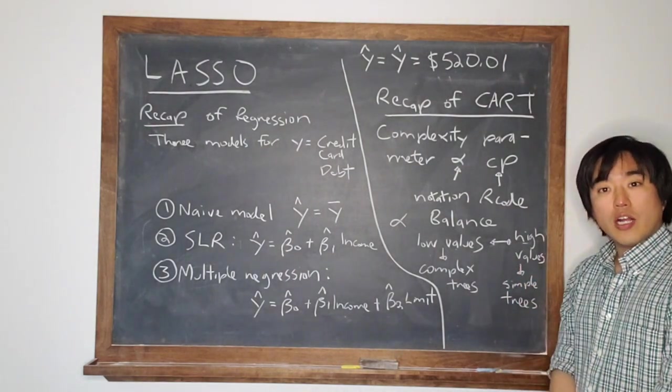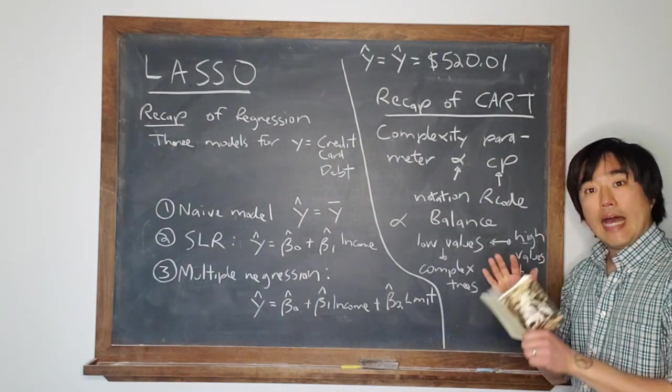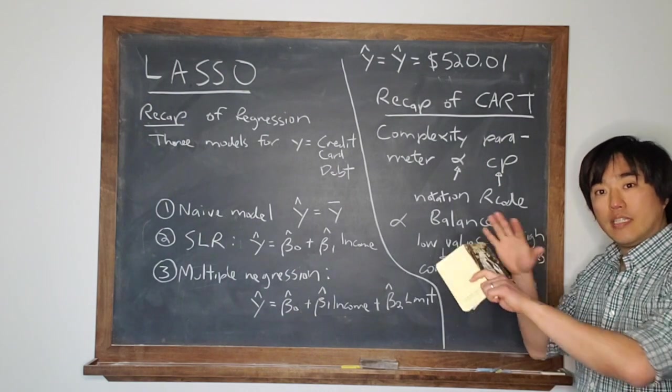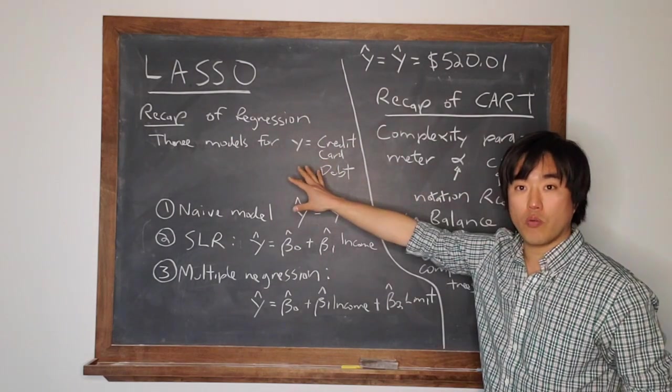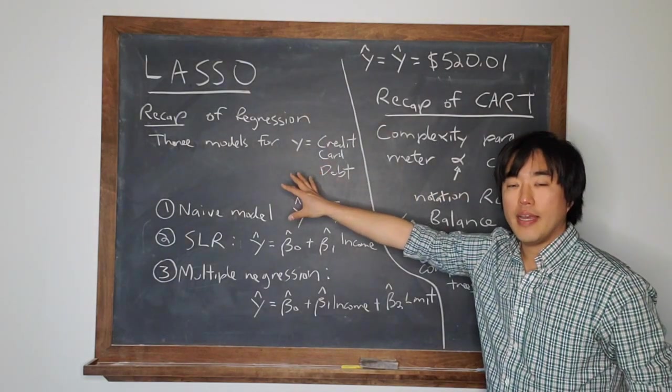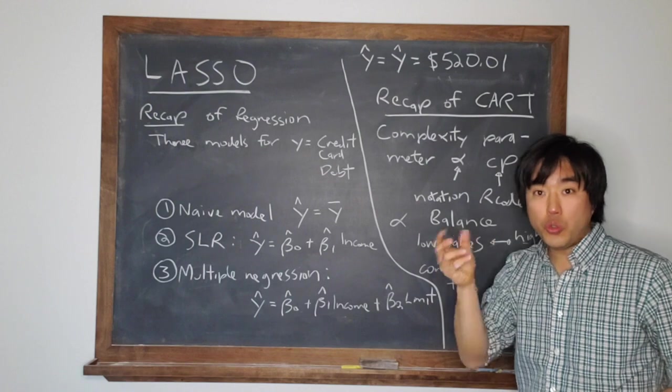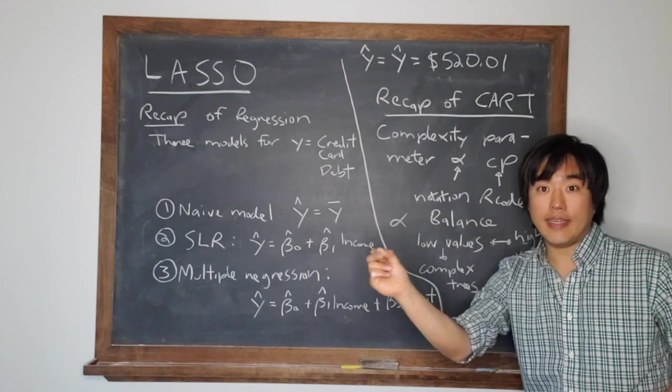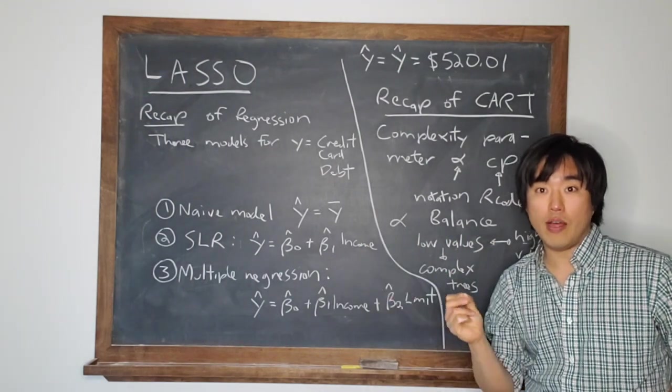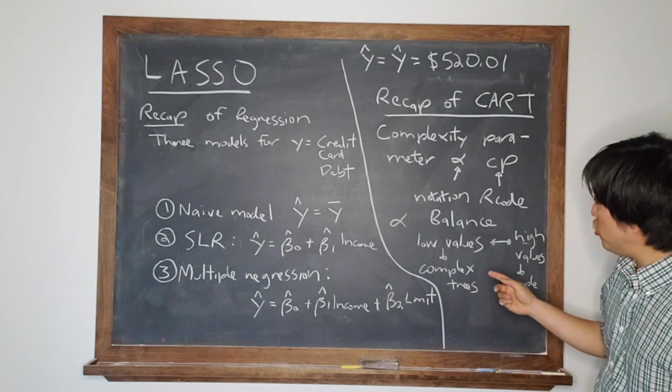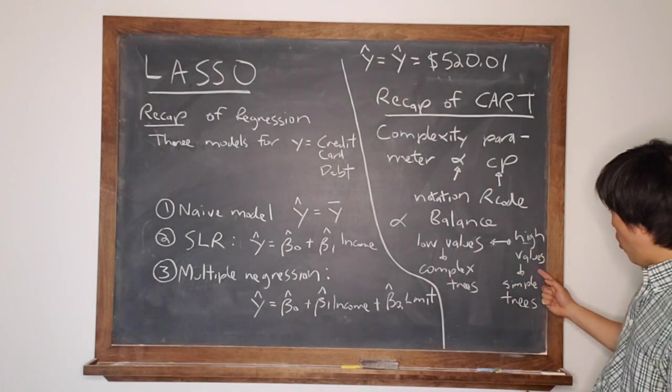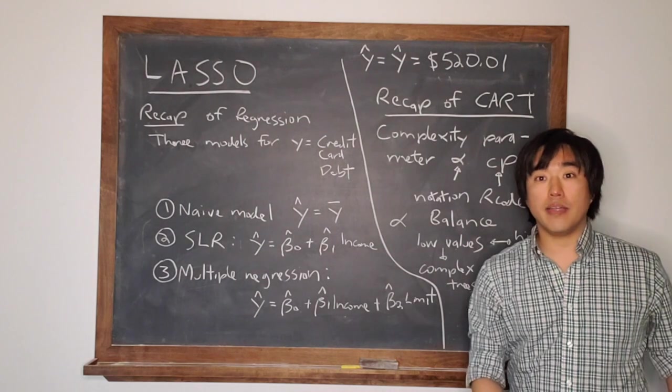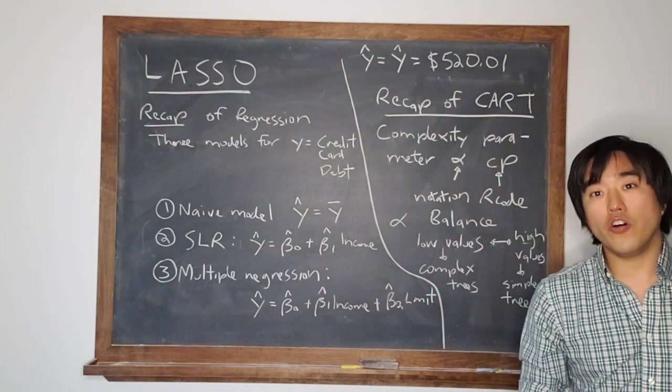So now let's talk about LASSO. LASSO combines these two ideas. At the root of LASSO is multiple regression. But it allows you a tool or a dial or a setting or a slider that you can play around with that allows you to choose between low complexity models and high complexity models.